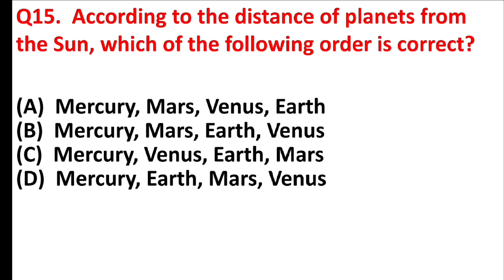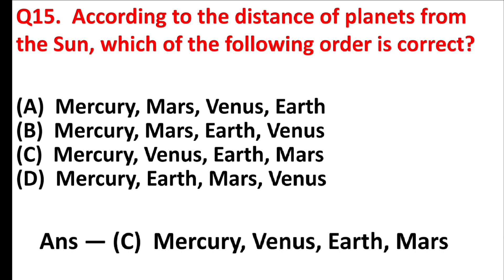According to the distance of planets from the sun, which of the following orders is correct? Answer is option C: Mercury, Venus, Earth, Mars.